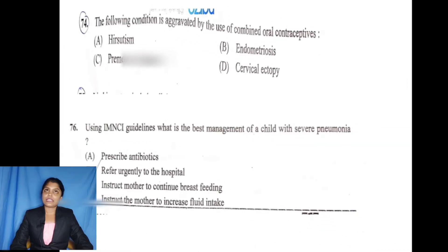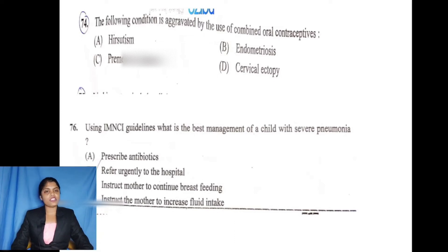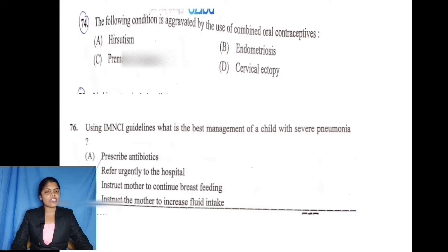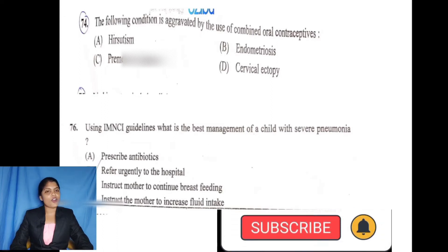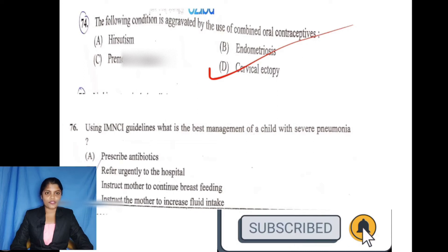The next question: Which of the following conditions is activated by the use of combined oral contraception? Options are: hirsutism, endometriosis, premenstrual tension, and cervical ectopy. If you use oral contraception, you can manage premenstrual tension. The answer is cervical ectopy — this means the cervix is very low.